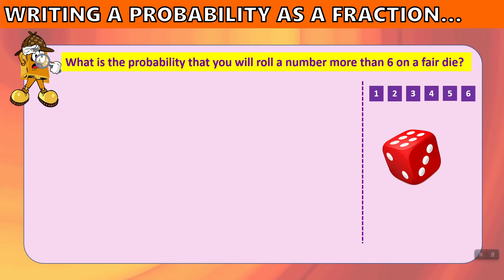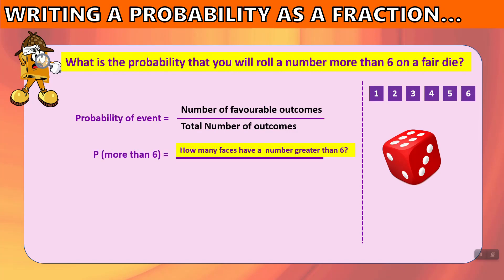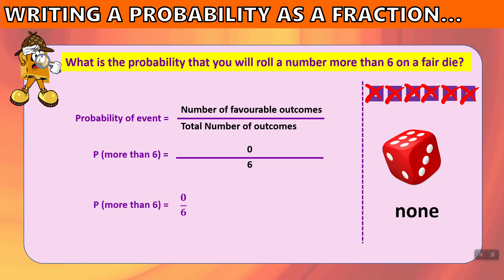What about the probability of rolling a number more than 6 on a fair die? The only numbers on the die are 1, 2, 3, 4, 5, and 6 — none of those are greater than 6. So it is a 0 out of 6 chance, which is 0%. This is impossible — you cannot roll a number more than 6 on a die.